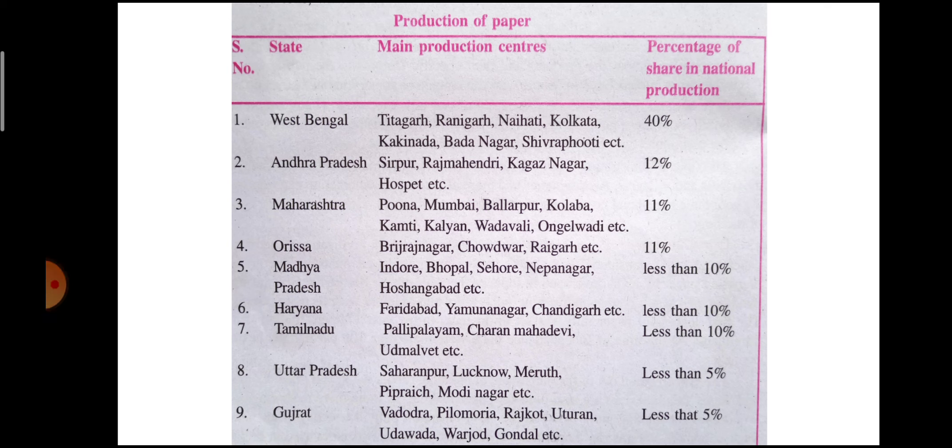Odisha contributes 11% of paper production. Madhya Pradesh's centers include Indore, Bhopal, Sehore, and Nepanagar. The paper industry at Nepanagar produces only newsprint. This is situated in Burhanpur district. Hoshangabad also has a paper mill known as the Security Paper Mill.